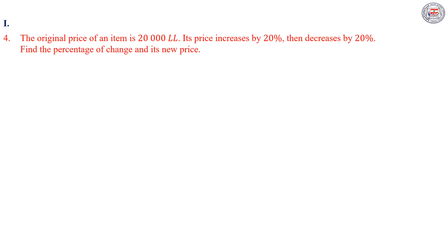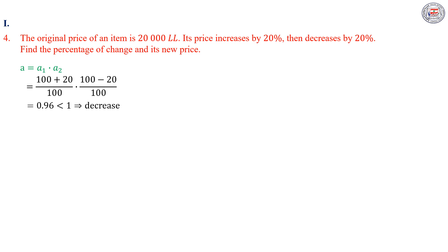In Part 4, the original price of an item is 20,000 Lebanese pounds. Its price increases by 20% then decreases by 20%. Find the percentage of change and its new price. The percentage of change is R. To find R, we first find A, which equals A1 times A2 since we have two successive changes: an increase by 20% and a decrease by 20%. Then A equals (100 plus 20) over 100 times (100 minus 20) over 100, giving A equal to 0.96, which is less than 1 — so we have a decrease in price.